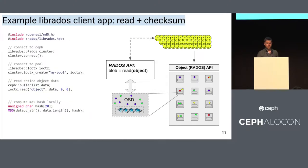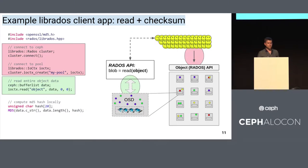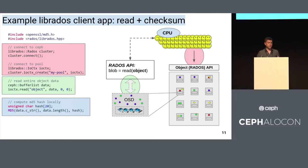This code snippet is an example where we read an object and take a checksum of it. First, we connect to the cluster and open an IO context for a pool. Then we read the data back into the heap into a buffer list. After reading, the data is in the heap, so you can apply the MD5 sum function using the local CPU resources on your client. It's worth noting that Ceph doesn't do everything — for example, it doesn't compute MD5 sums for you. But it could be advantageous to do this remotely if your objects are large or you want to compute sums over a large number of objects. Being able to do that remotely on the OSDs may provide performance benefits.